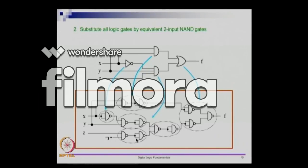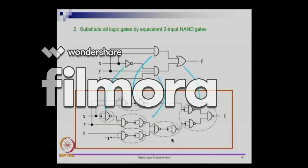What we now have is an AND-OR circuit redrawn using only NAND gates. In this picture, there are NAND gates and nothing else. The only extra thing is for z: instead of taking z directly, we have z going through a NAND with one, followed by an inverter — complement of z, then complement again gives z. So instead of a direct wire, we use a NAND with one followed by an inverter, which equals z itself. This circuit has only two-input NAND gates and nothing else.